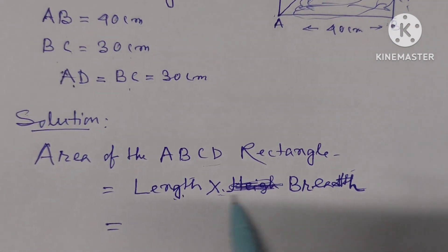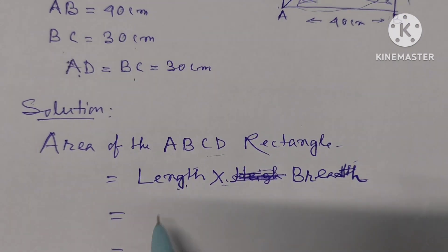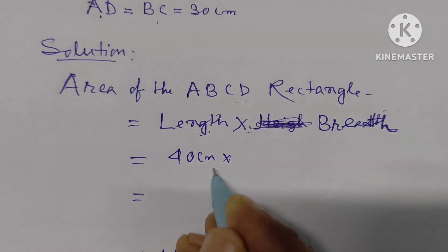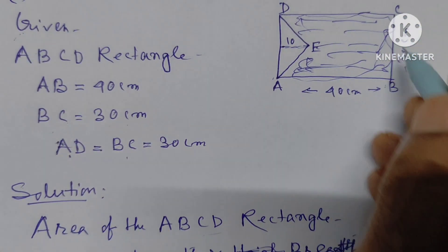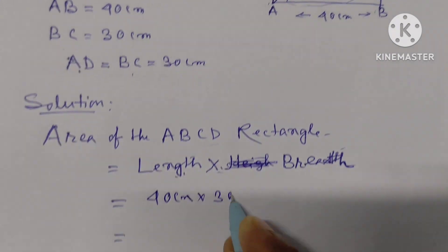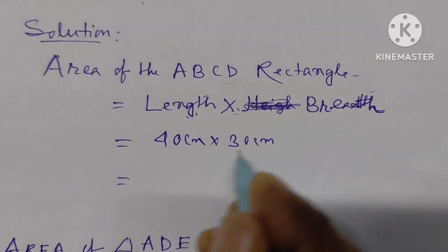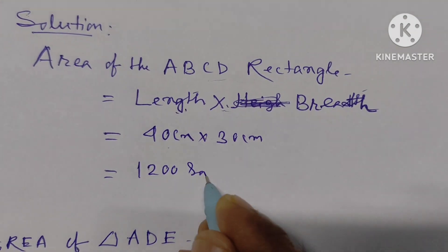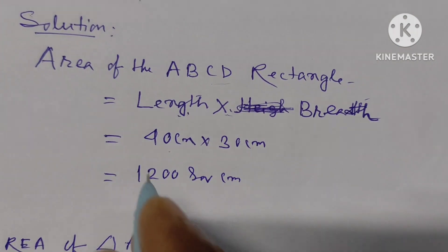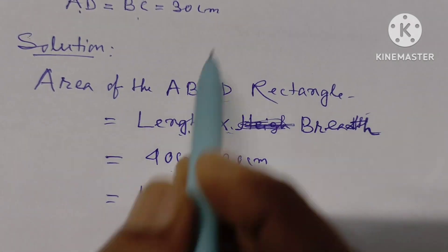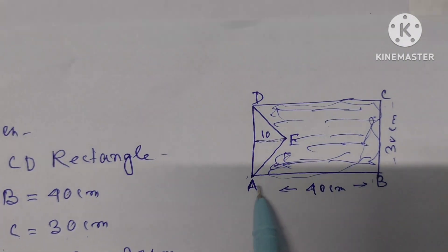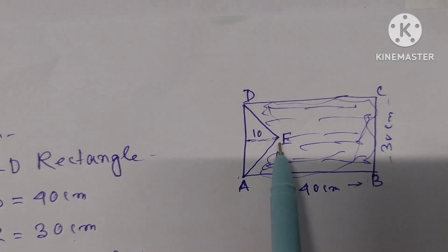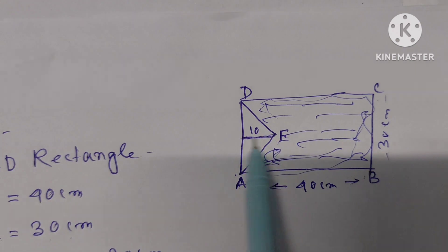Question number 5: Find the area of the colored portions. ABCD is a rectangle with length 40 centimeters and breadth 30 centimeters. If we multiply 40 × 30 = 1200 square centimeters. This is the area of rectangle ABCD. Now we have to find the area of triangle AD, where AD is the base and the given measurement is the height.